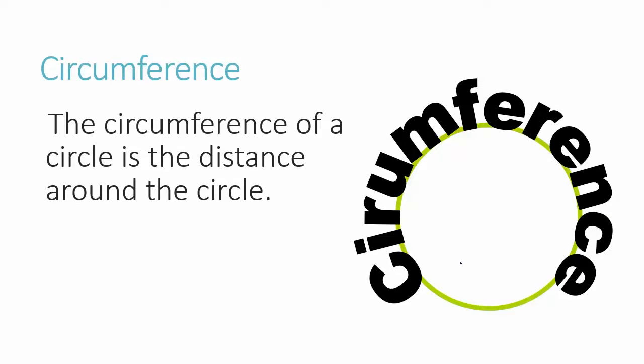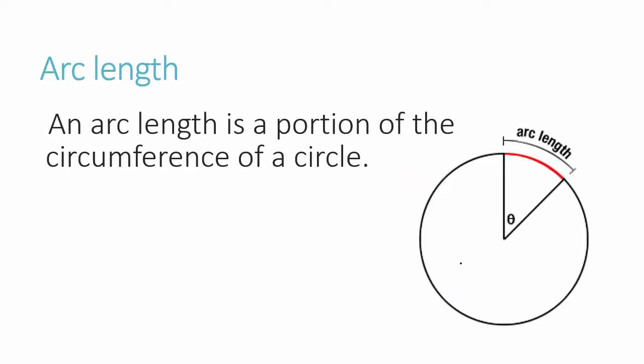Circumference: the circumference of a circle is the distance around the circle. Arc length: an arc length is a portion of the circumference of a circle — we're only looking at a small part of the circle. Think about it as the crust of the pizza pie.